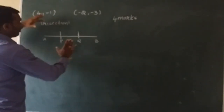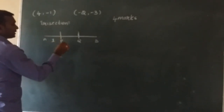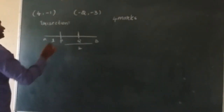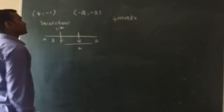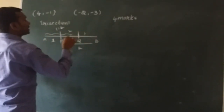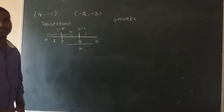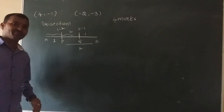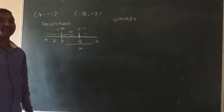For point P: left side has 1 part, right side has 2 parts — so P divides AB in the ratio 1 is to 2. For point Q: left side has 2 parts, right side has 1 part — so Q divides AB in the ratio 2 is to 1. These are called points of trisection.